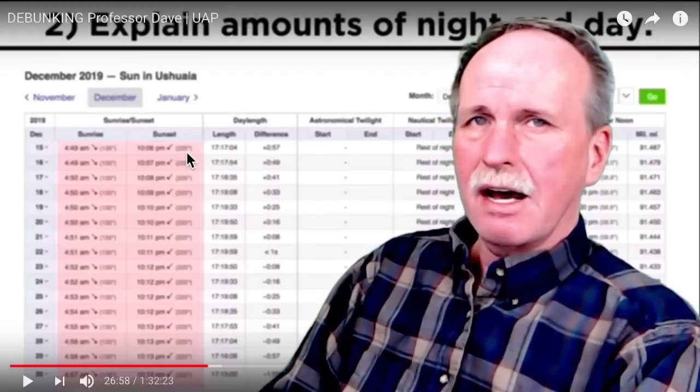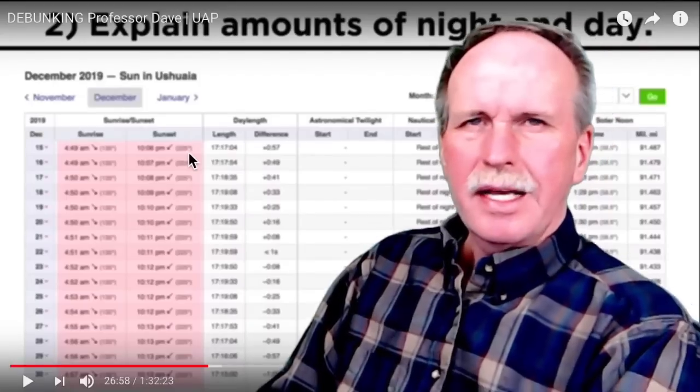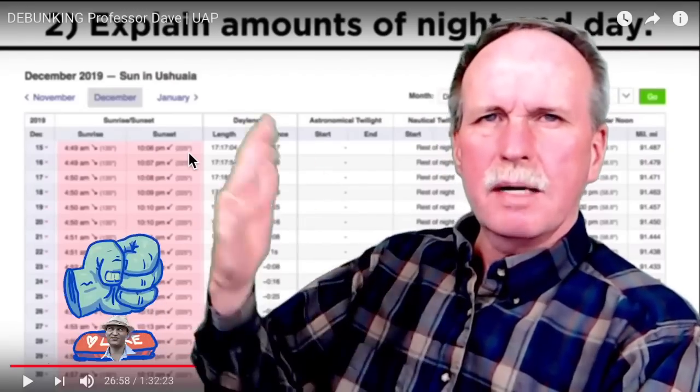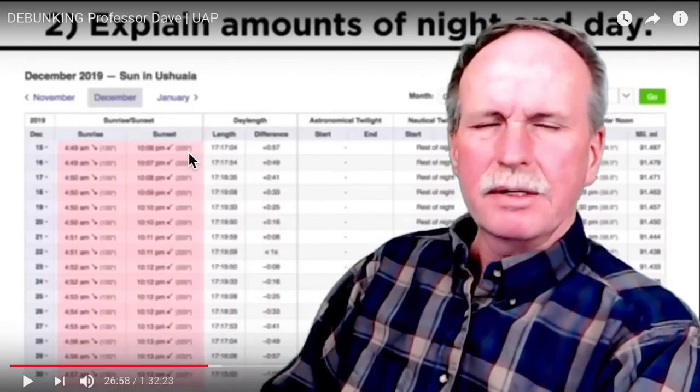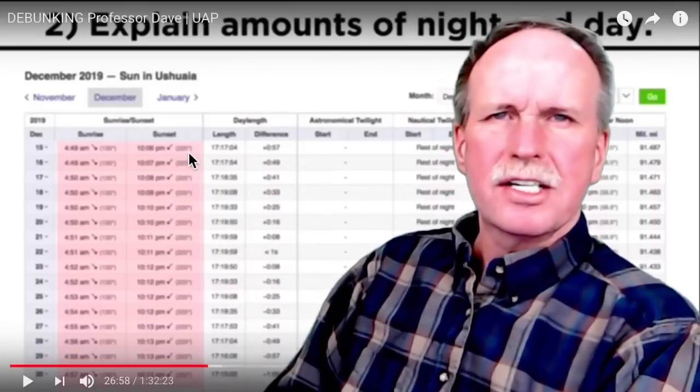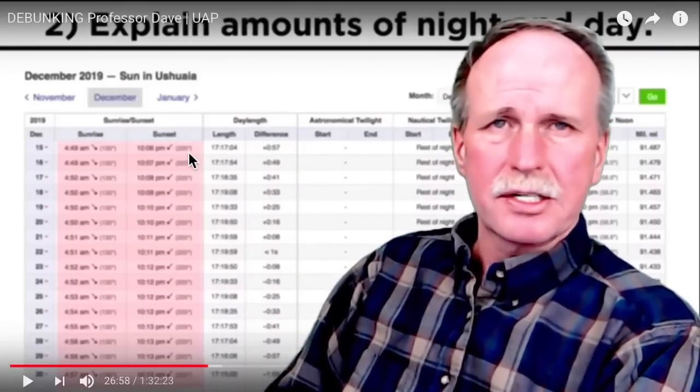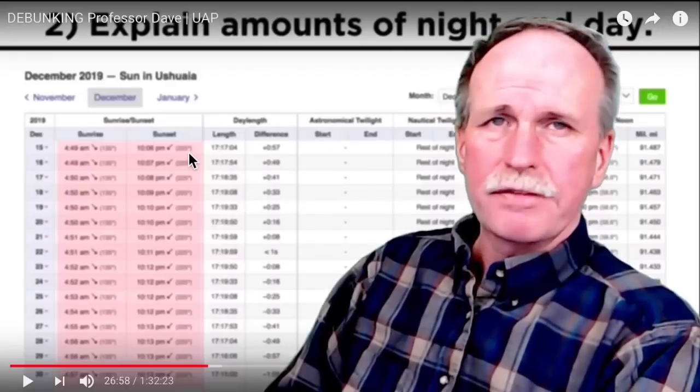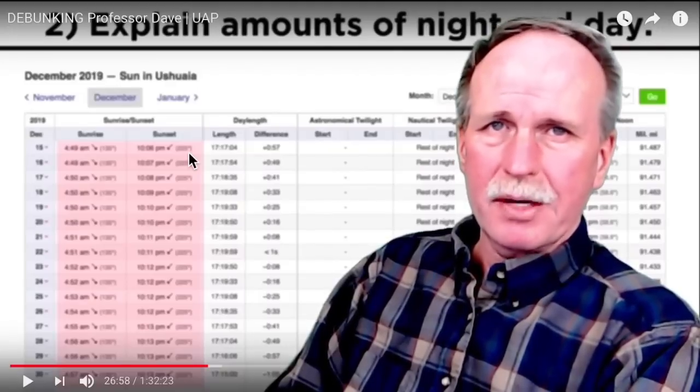And when it sets at 10:06 p.m., it sets at 225 degrees. Again, that is south of west. Yet at this time, the sun is up north of this town by the Tropic of Capricorn. So how does the sun rise and set south of an east-west line? Can't really figure that out on a flat-earth map, now can you?